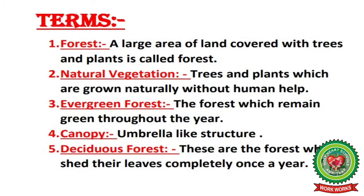Let's look at key terms related to today's topic. First, forest: a large area of land covered with trees and plants. Second, natural vegetation: trees and plants which grow naturally without human help. Third, evergreen forest: forests which remain green throughout the year. Fourth, canopy: an umbrella-like structure formed by tree tops. Fifth, deciduous forest: forests which shed their leaves completely once a year.